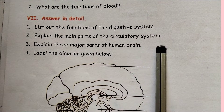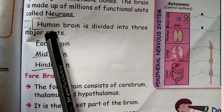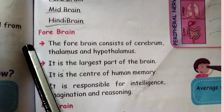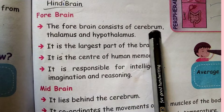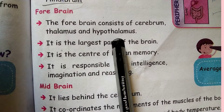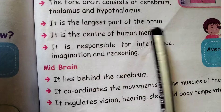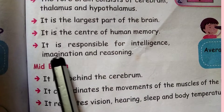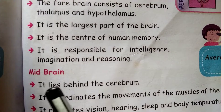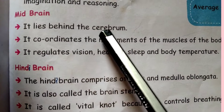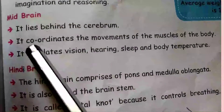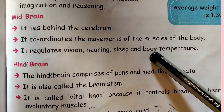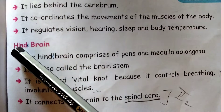Explain the three major parts of the human brain. The human brain is divided into three major parts: forebrain, midbrain, and hindbrain. Forebrain consists of the cerebrum, thalamus, and hypothalamus. It is the largest part of the brain and the center of human memory. It is responsible for intelligence, imagination, and reasoning. Midbrain lies behind the cerebrum; it coordinates the movement of the muscles of the body and regulates vision, hearing, sleep, and body temperature.